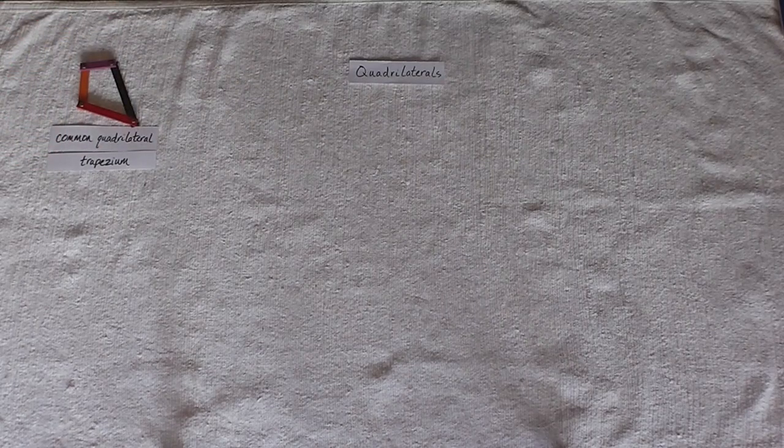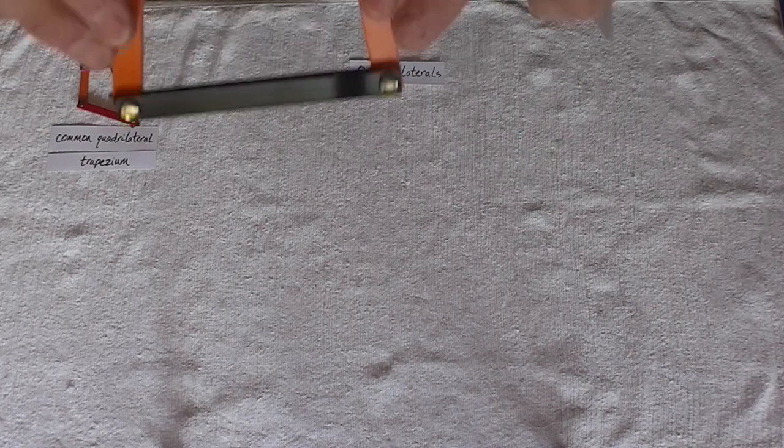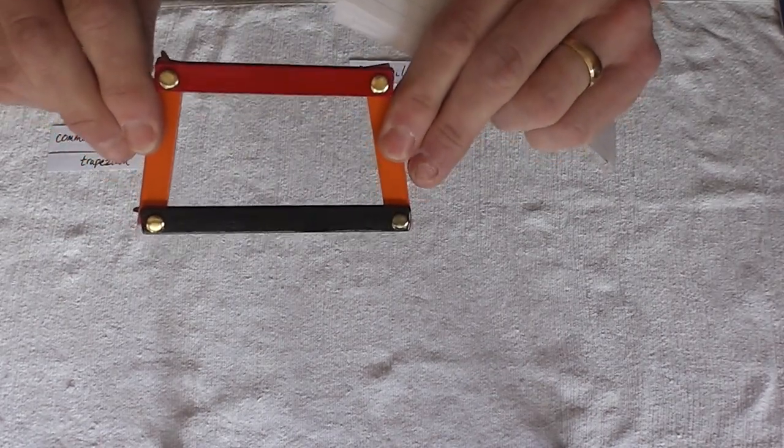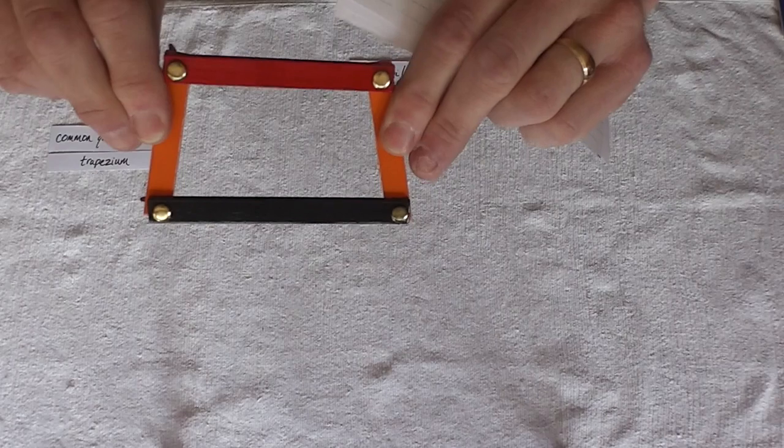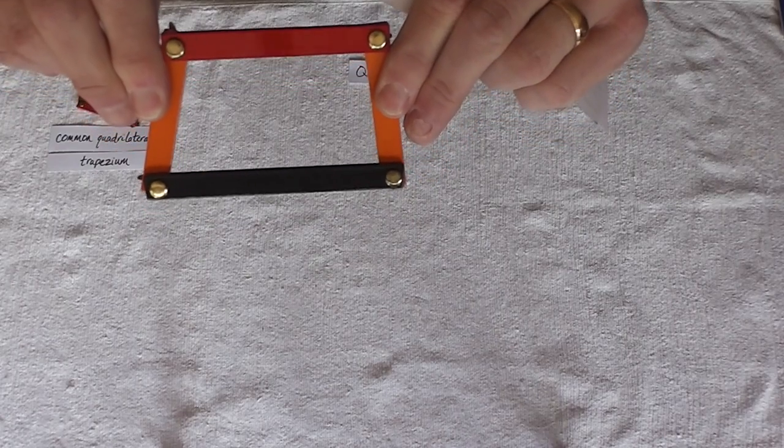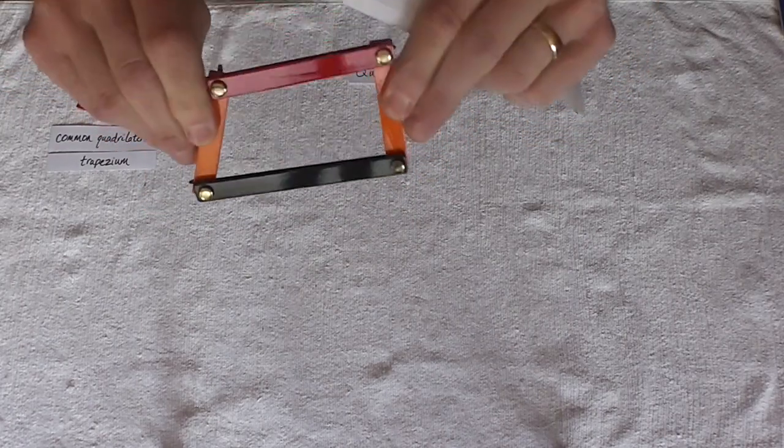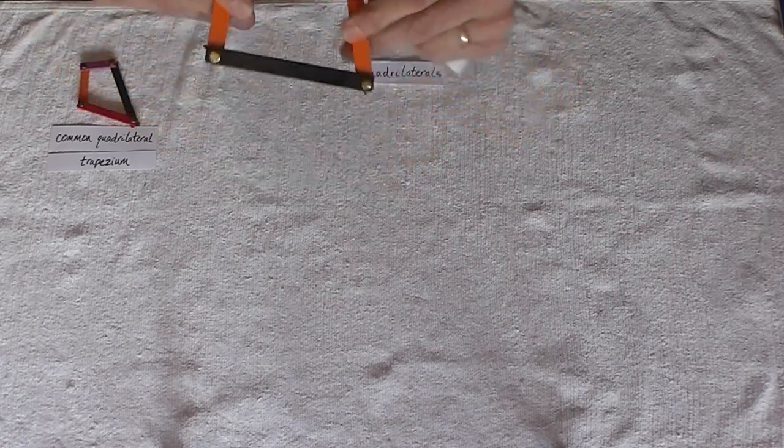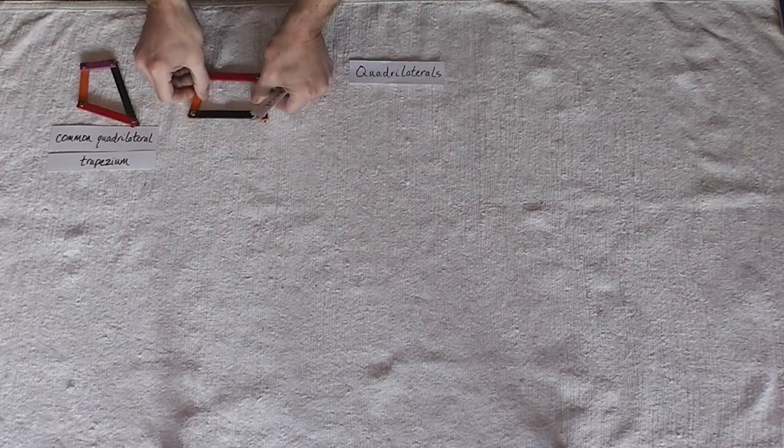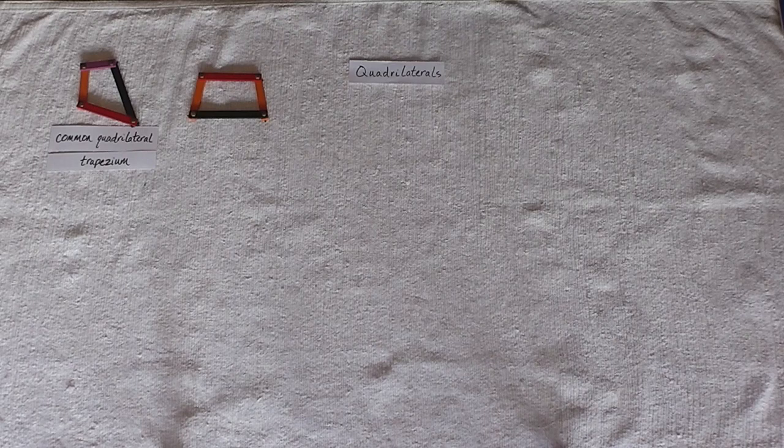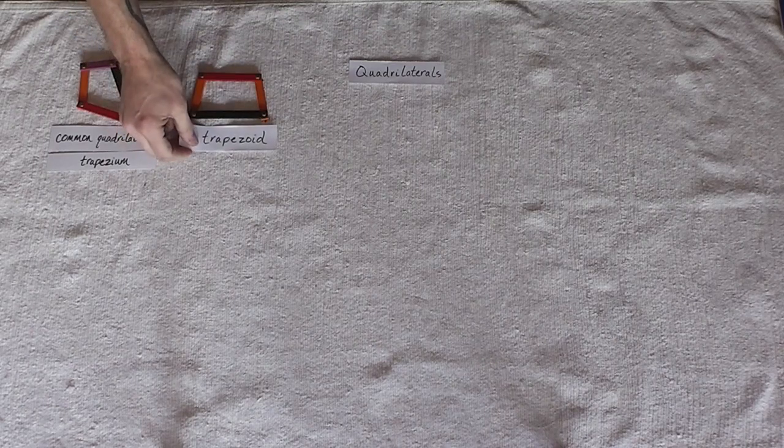Our next shape. It has two sides the same length, but it's also got, according to our red and black sticks, one set of parallel sides. We're going to call this a trapezoid.